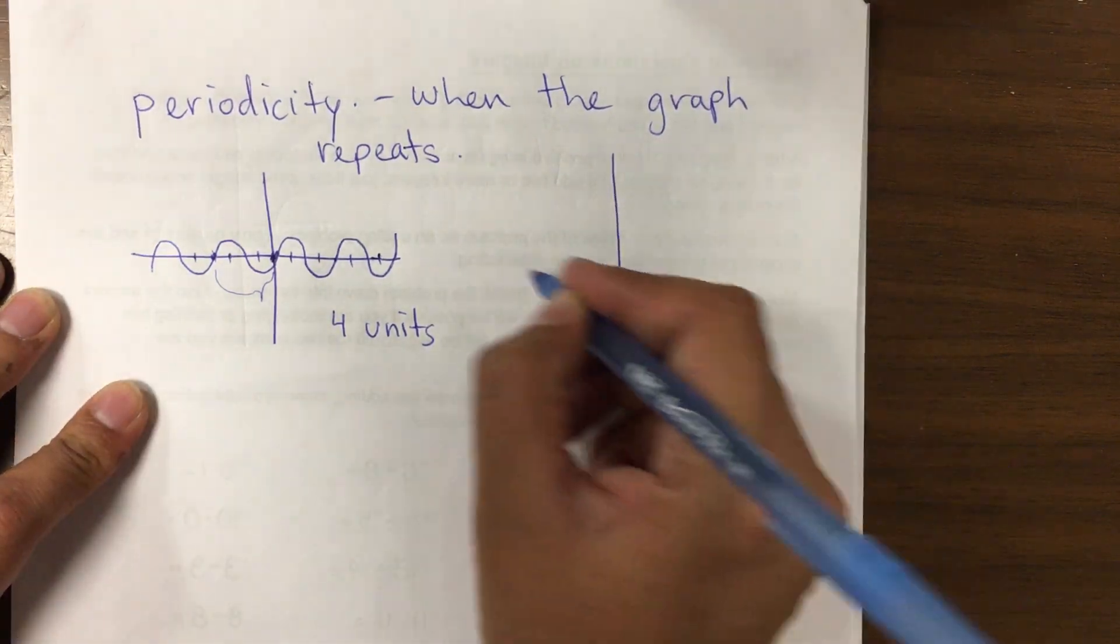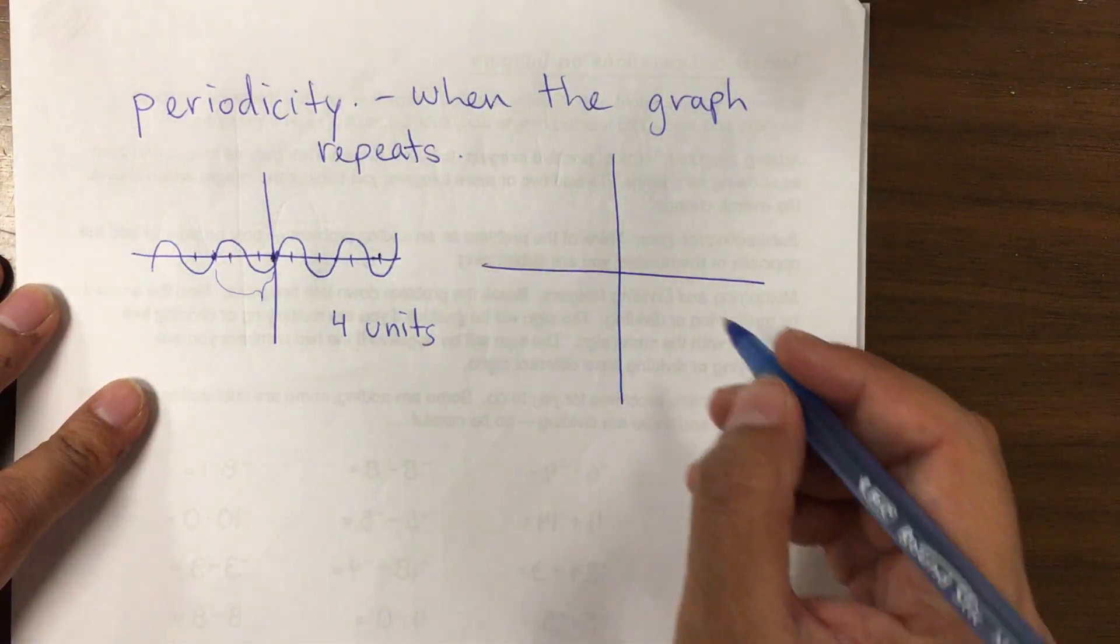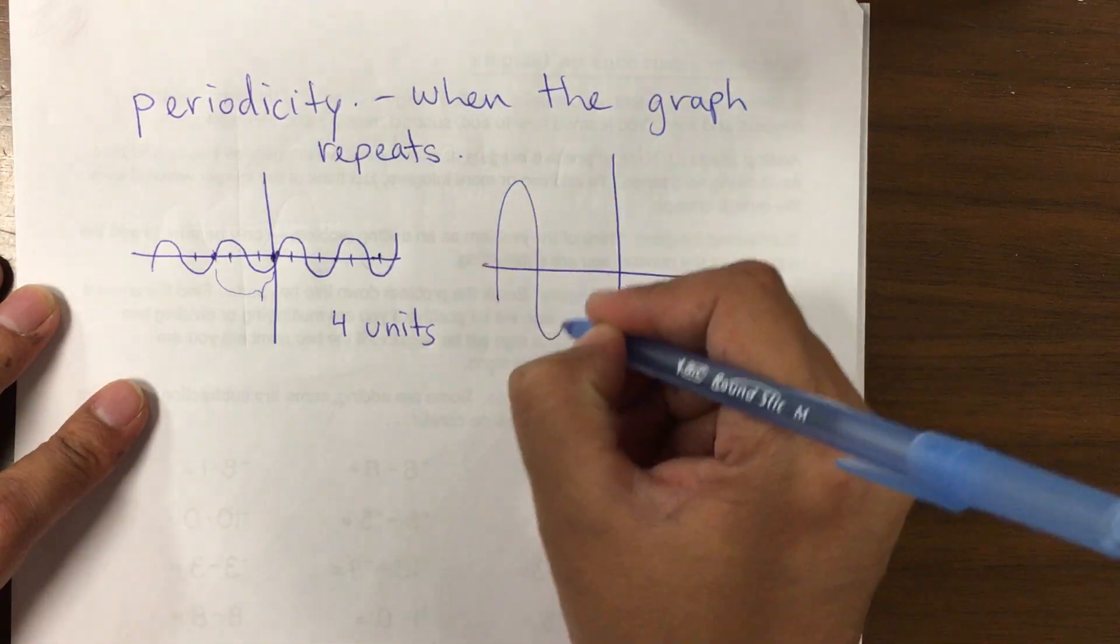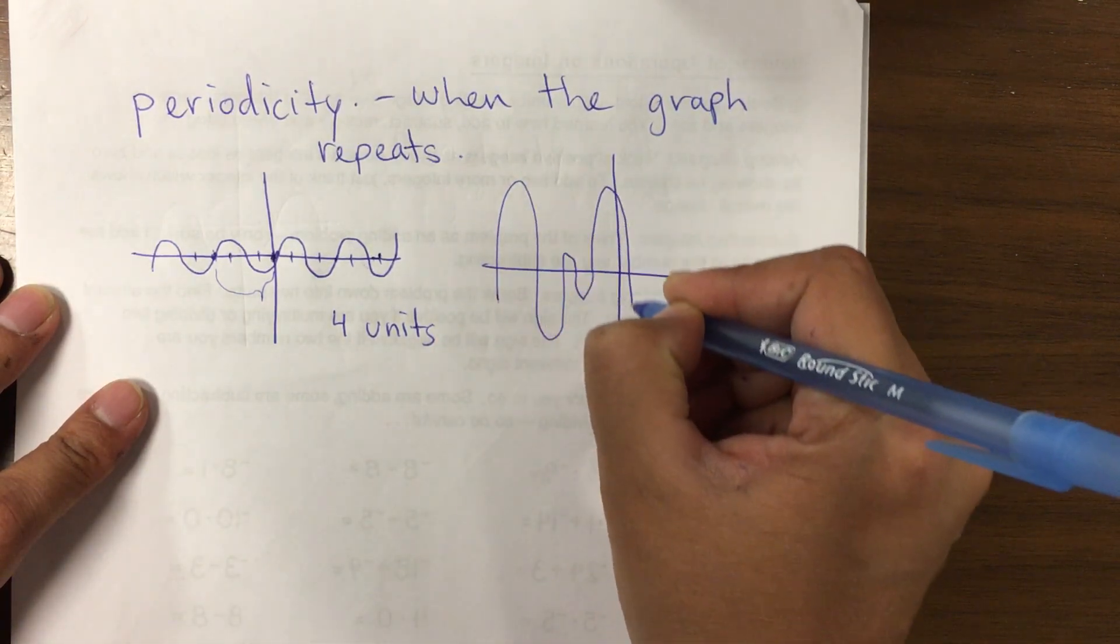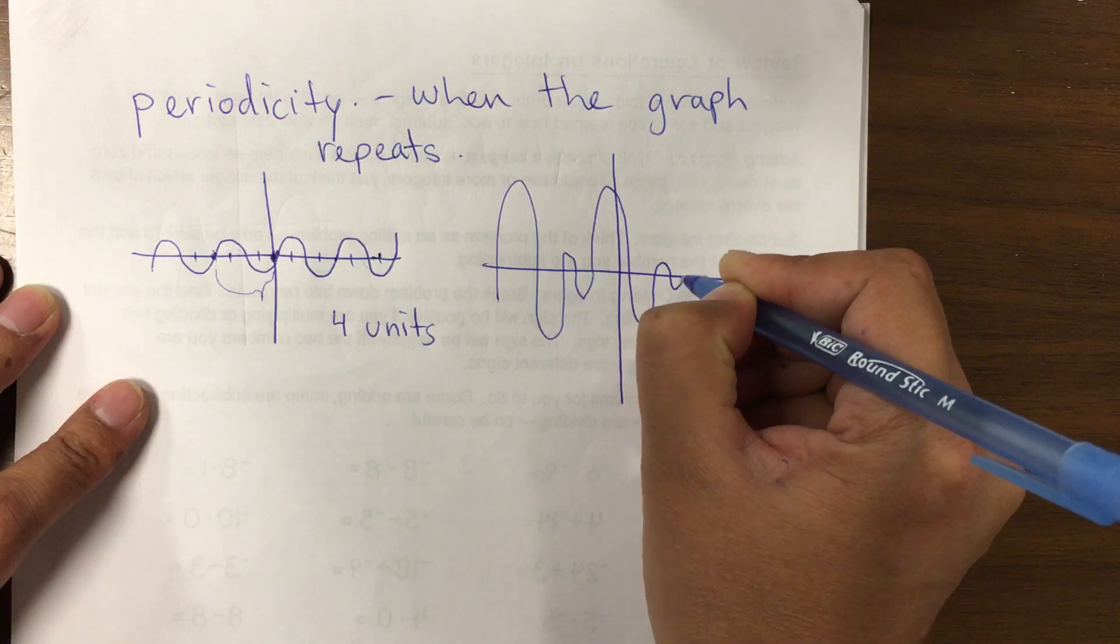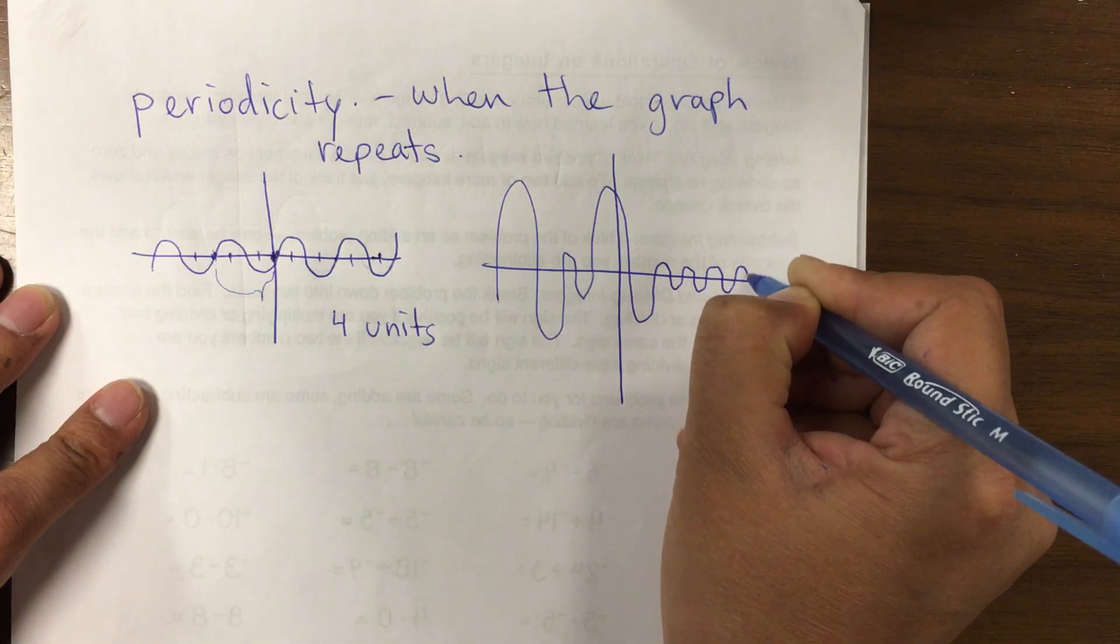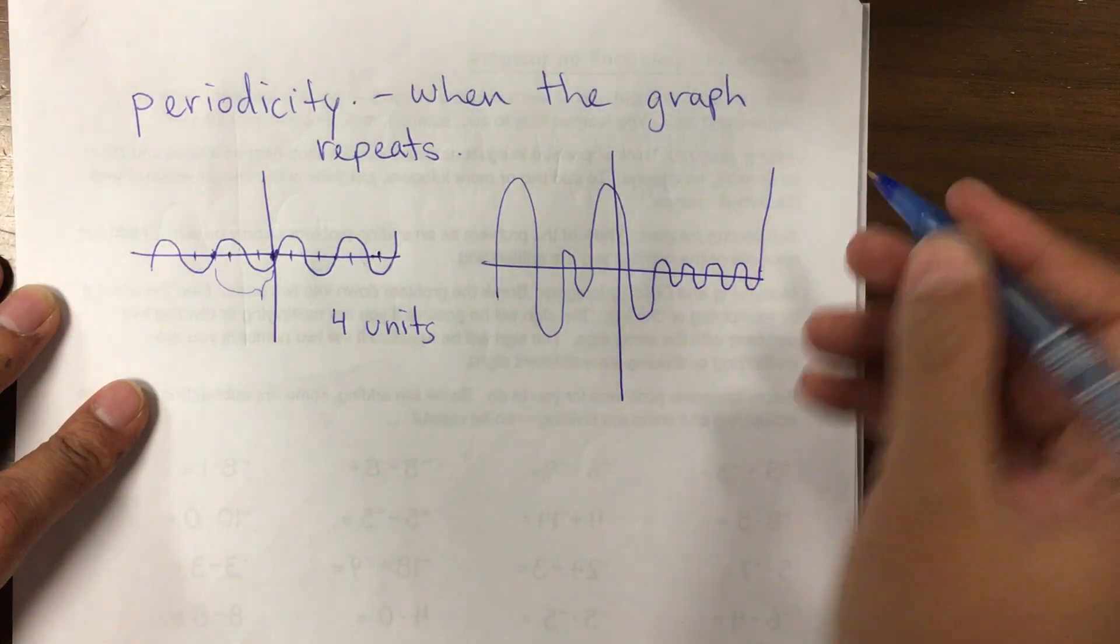Others repeat every 3 units, others repeat every 2 units. So it all depends on where it starts and then how long it takes. Sometimes the graph is periodic only at certain points, so there can be a place where it has periodicity.